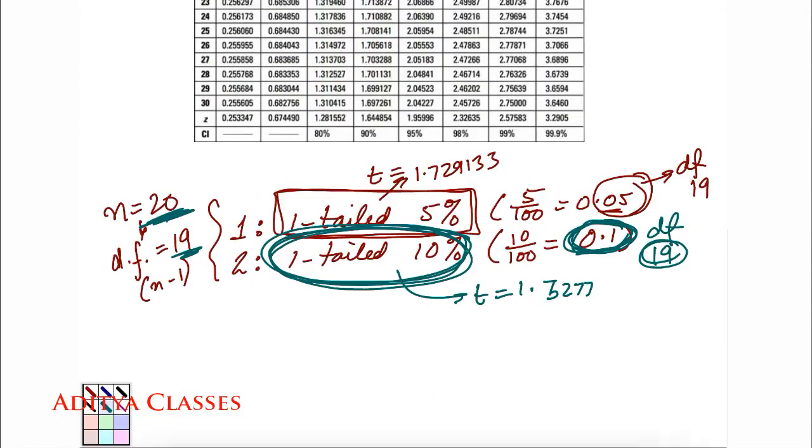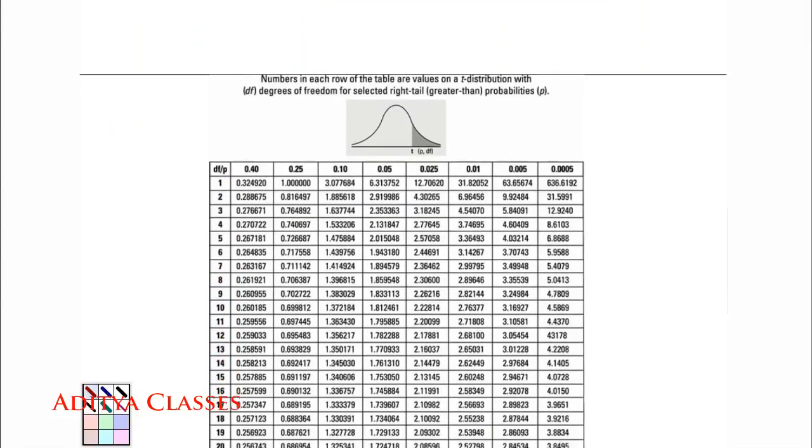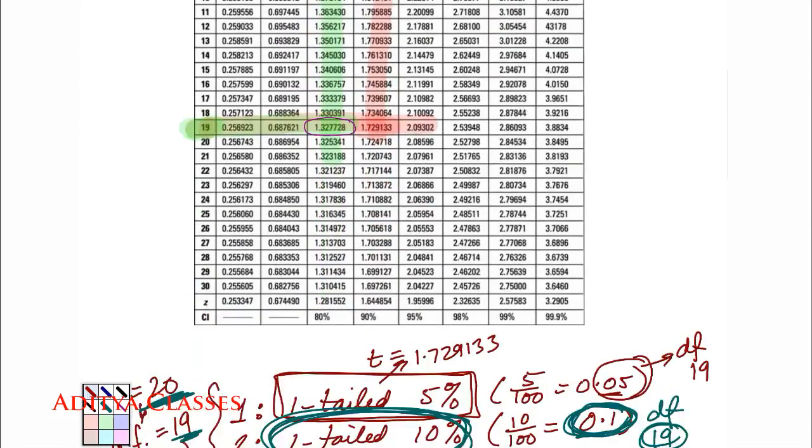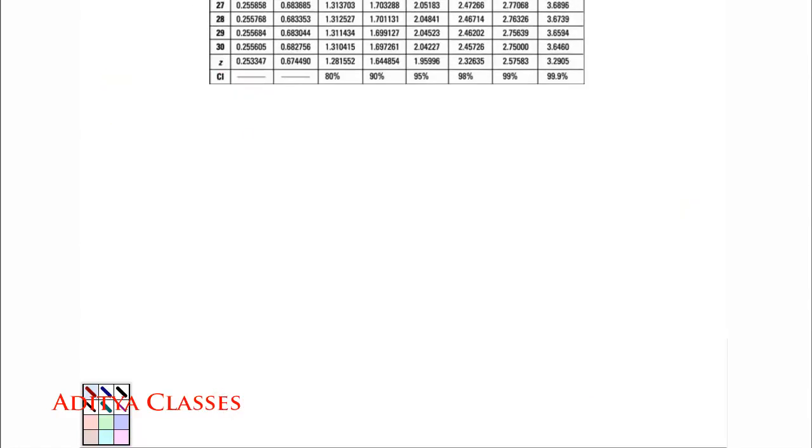Now, we will learn how to see these t-values for two-tailed tests. Now, that we have this table imported over here, we will make certain questions for two-tailed tests and then we will solve them. Or rather, we can pick these questions. One-tailed 5%, one-tailed 10%. Rather, we will solve.